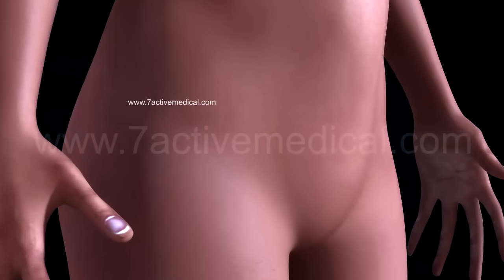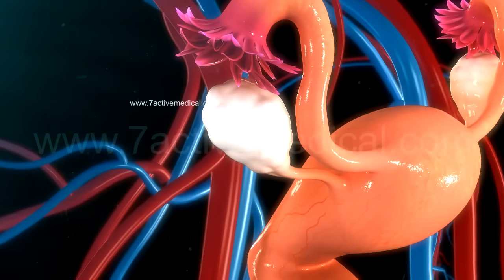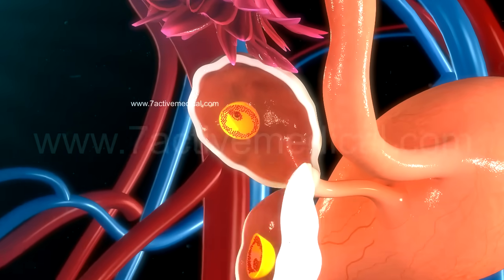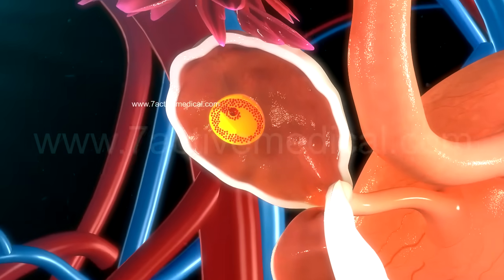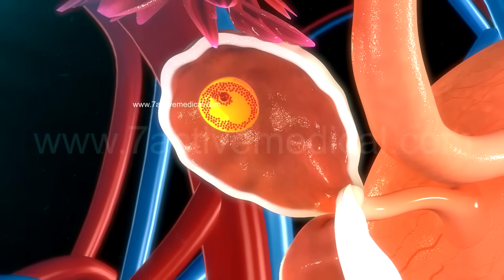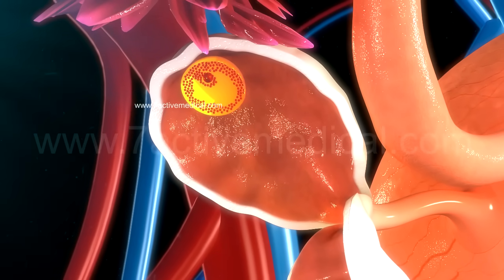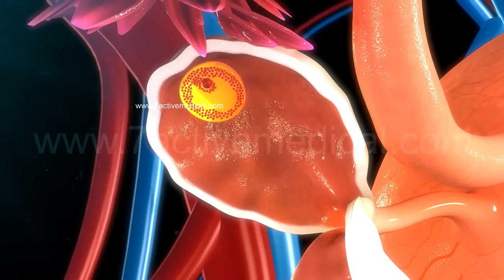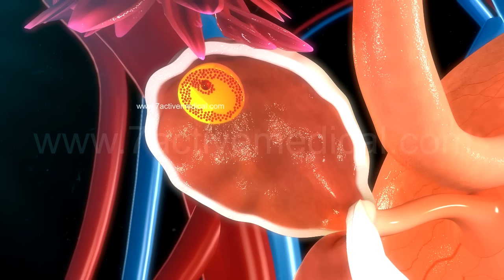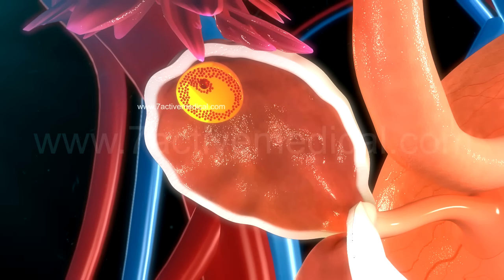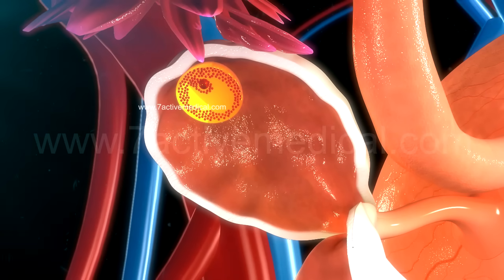FSH helps the egg to mature in preparation for its release during ovulation, while the estrogen secreted by the developing follicles helps in the regeneration of the endometrial lining of the uterus.